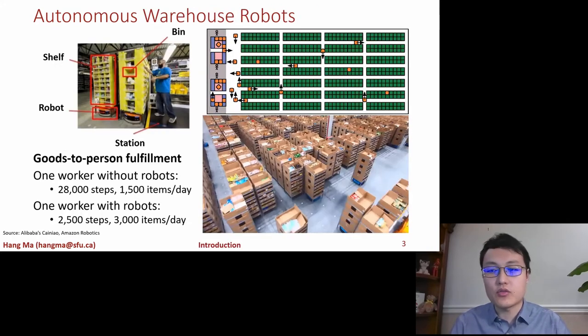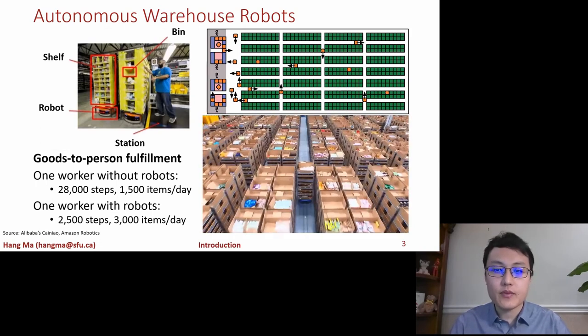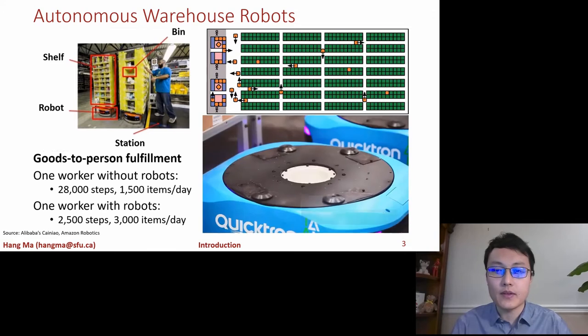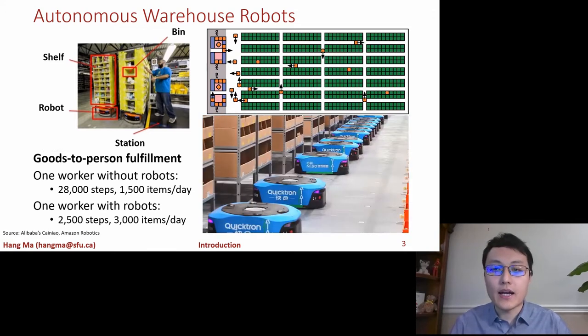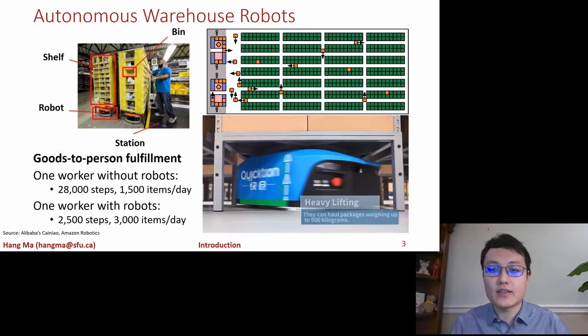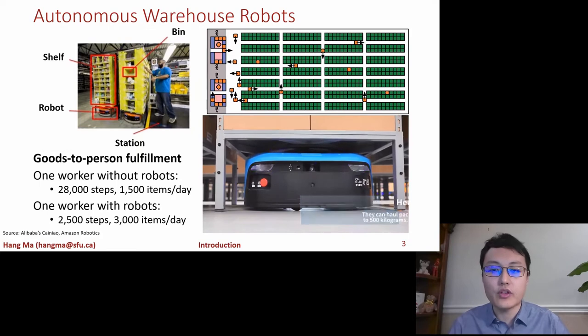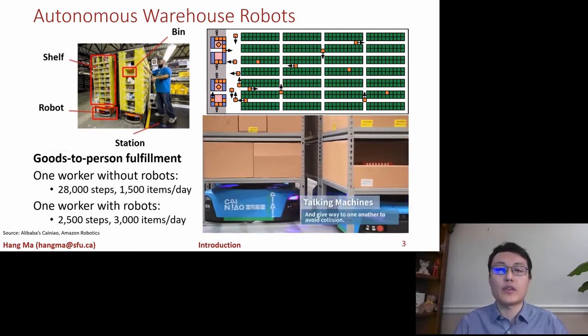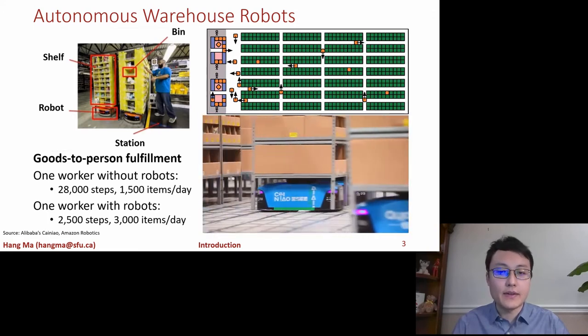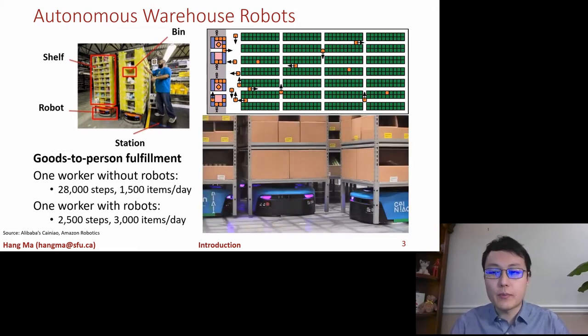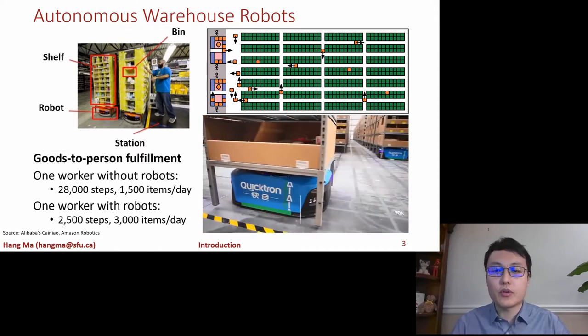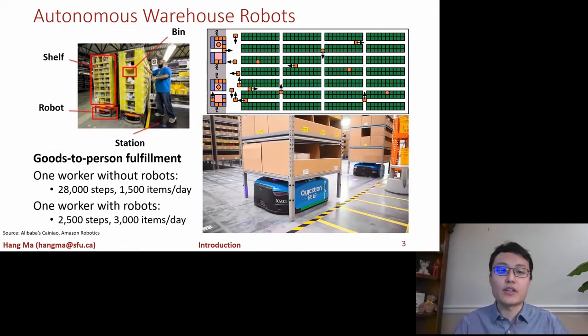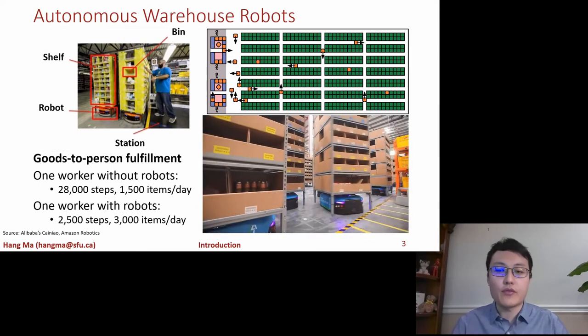Before that, let's look at one such multi-agent system that is already running today. That's the automated fulfillment centers by logistic companies such as Amazon and Alibaba. Imagine if you order a teddy bear online, the system will send the robot to move the shelf that contains the teddy bear all the way from its storage location to the packing station that needs the teddy bear. The human worker at the packing station will just pack the teddy bear with other products in order and then ship them together. This so-called goods-to-person fulfillment model can significantly increase the throughput of the system while reducing the workload and safety hazard of the human workers since the workers now only need to stay or even sit in the packing stations and wait for their goods to come.